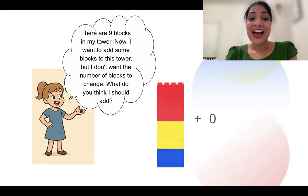You guessed it right. What if I add zero? Zero is also a number, but it has no value. So adding it will give us the same number of blocks. This is actually identity property.